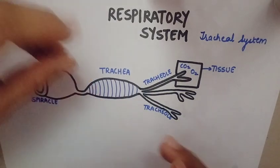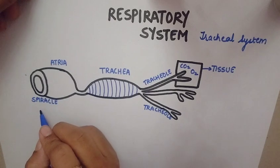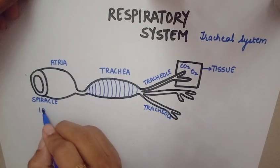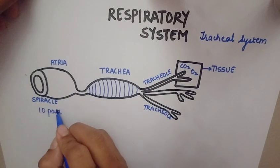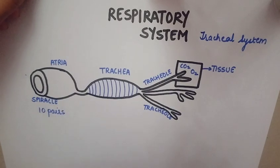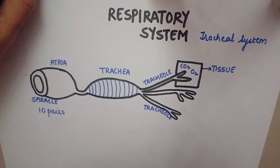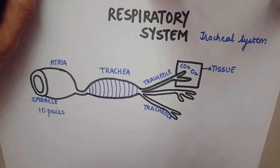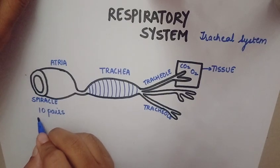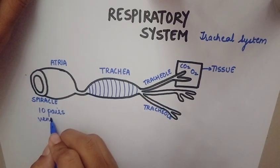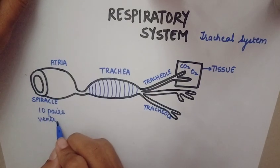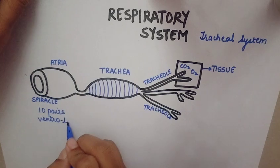How many openings are there? There are 10 pairs of openings present. These openings are called spiracles. So spiracles are 10 pairs of openings present on the ventrolateral surface of the cockroach.